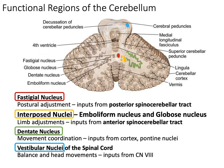Here's a little more in depth. The fastigial nucleus is responsible for postural adjustment, and if you remember your tracts, this nucleus has inputs from the posterior spinal cerebellar tract. The interposed nuclei have inputs from the anterior spinal cerebellar tract, performing limb adjustments. The dentate nucleus has inputs from the cortex and pontine nuclei, and the vestibular nuclei has inputs from cranial nerve eight — the vestibulocochlear nerve — so the vestibular side helps with balance and sense of orientation.